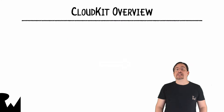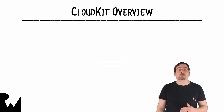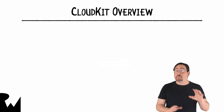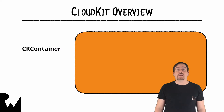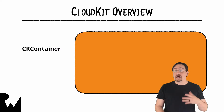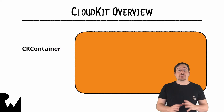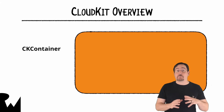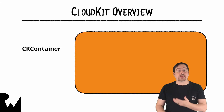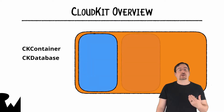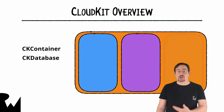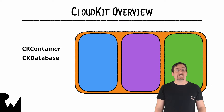As mentioned, CloudKit is a framework that is composed of many different parts. The first part is called a container. Each app has a container and everything for your app in CloudKit exists within that container. Containers hold three databases: a public, a private, and a shared database. These databases contain all of your users' data.